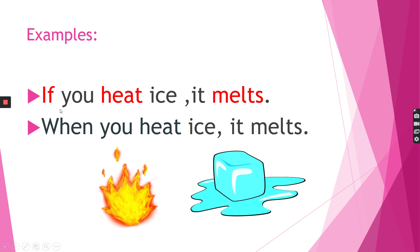Do you notice the sentence? It constitutes of two parts: 'If you heat ice, it melts.' The first part we call the if clause or the condition, followed by a comma. The second part we call the result or the main clause. You can also say 'when' instead of 'if' — for example, 'When you heat ice, it melts.'